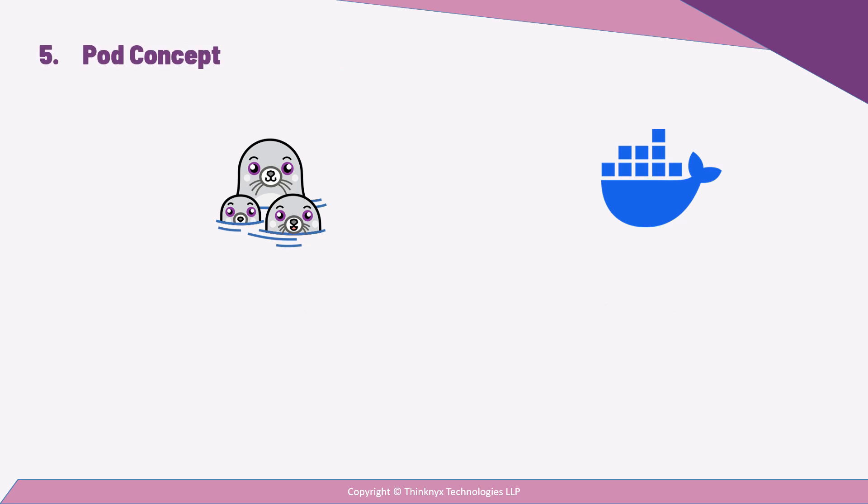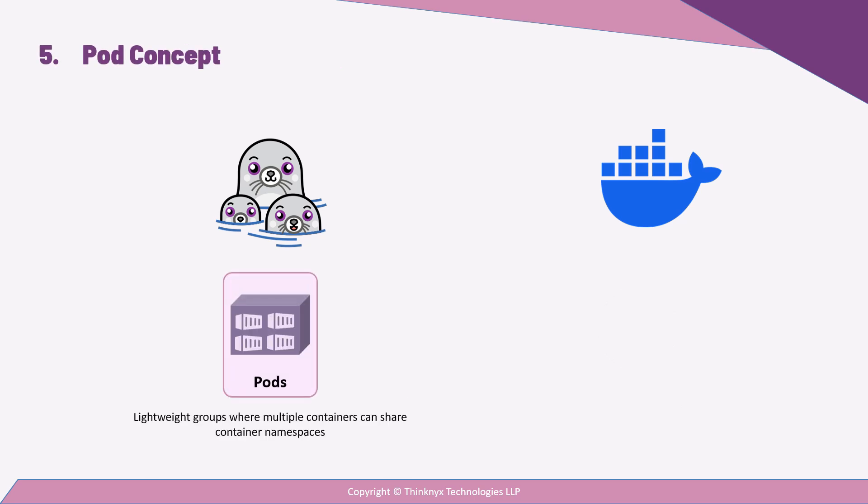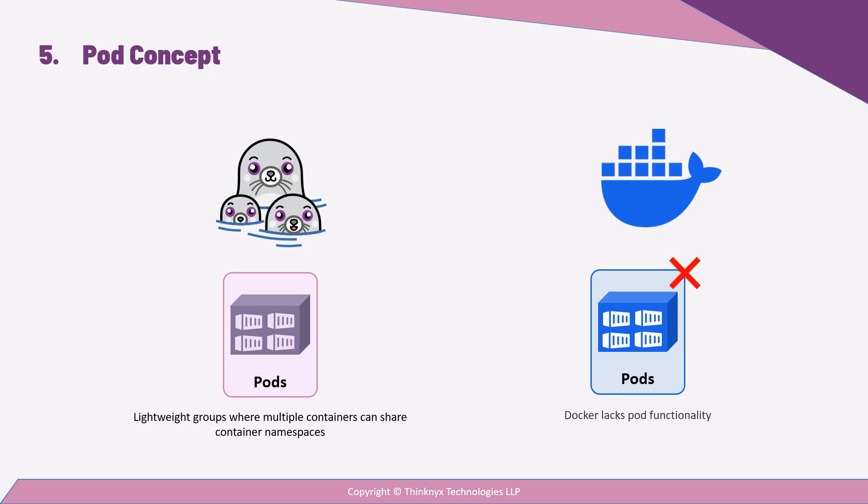A standout feature of Podman is its support for pods, which are lightweight groups where multiple containers can share a container namespace, common resources, and be managed as a single unit. Docker, however, lacks this pod functionality, which can lead to different strategies for handling multi-container applications. That concludes the comparison between Podman and Docker. I will see you in the next lecture.